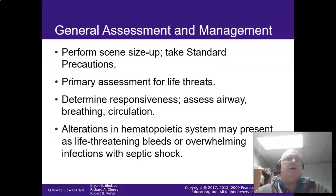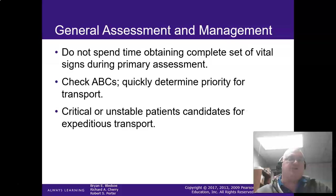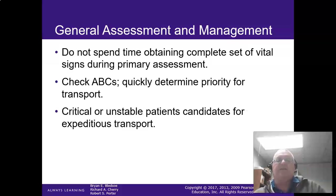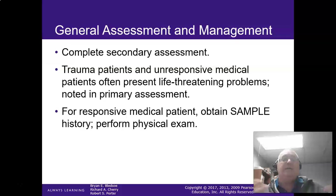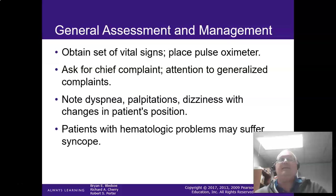Just like any other call: ABCs. Any type of life-altering bleeding, we need to make sure that we control. Overwhelming infections can cause trouble with red blood cell production. Don't spend time attaining vital signs during your primary assessment. ABCs first — critical or unstable — decide whether they are sick or not sick, and let's get them moving. For trauma patients and unresponsive medical patients, they're considered life-threatening. You should already know that in your primary assessment. Get a good SAMPLE history on these folks if you can.